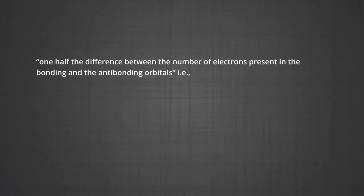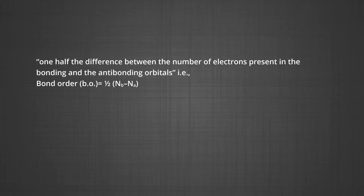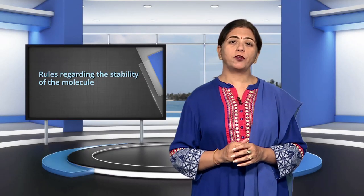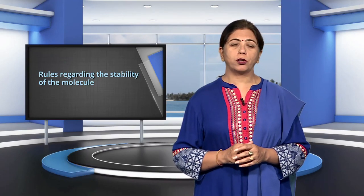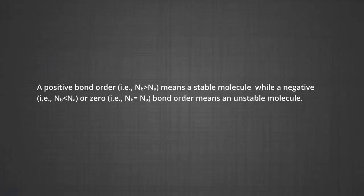Bond order is defined as one-half the difference between the number of electrons present in the bonding and anti-bonding orbitals: bond order = ½(N_b − N_a). A positive bond order means a stable molecule, a negative bond order means an unstable molecule, and a bond order of zero (N_b = N_a) means the molecule does not exist.